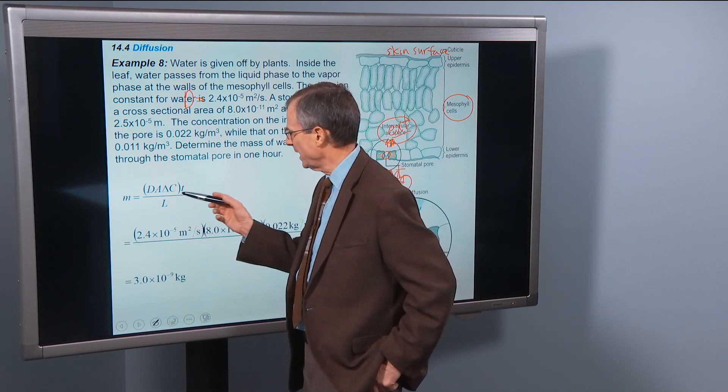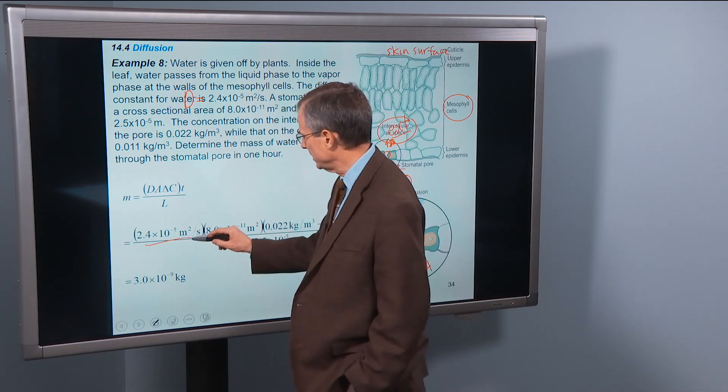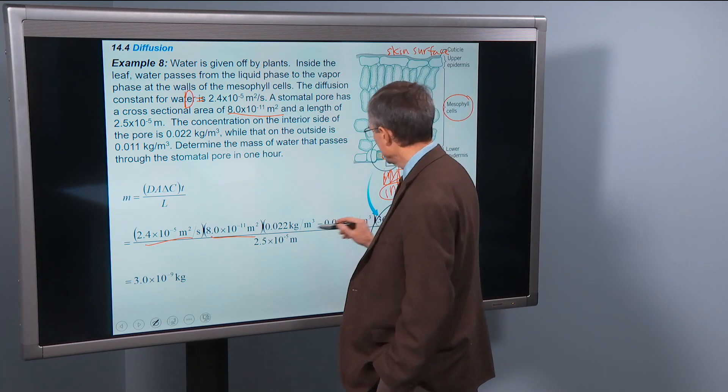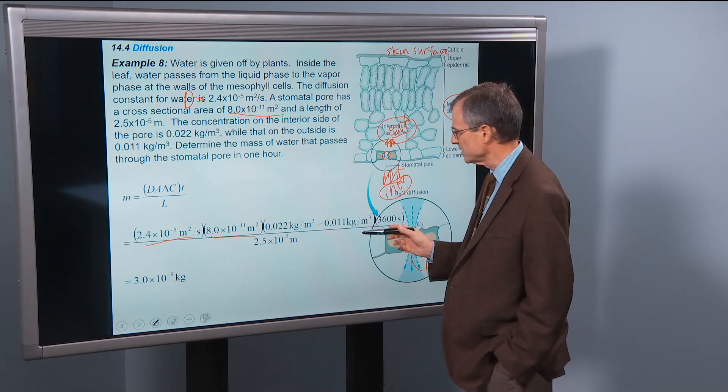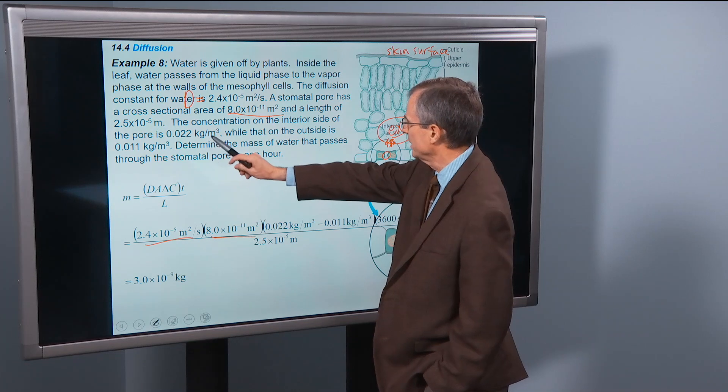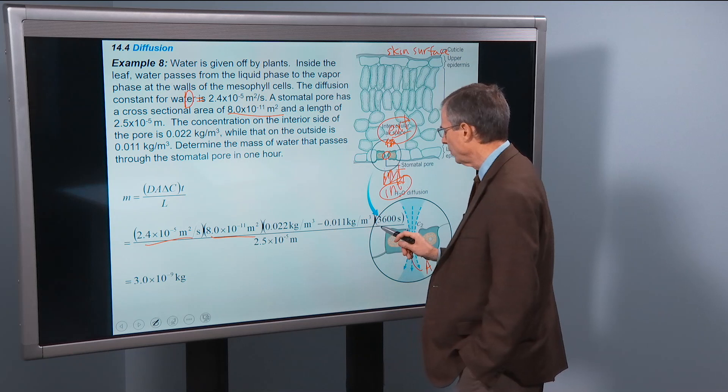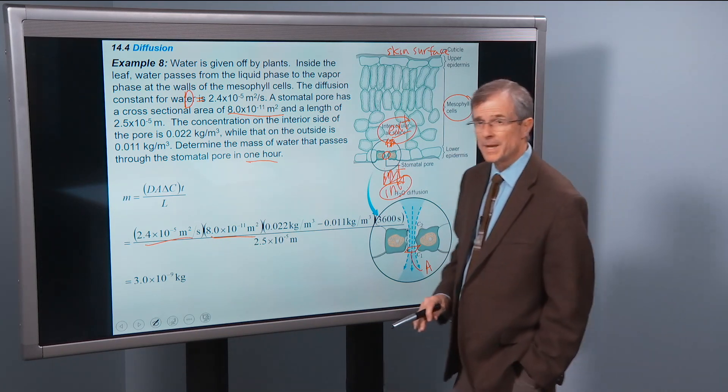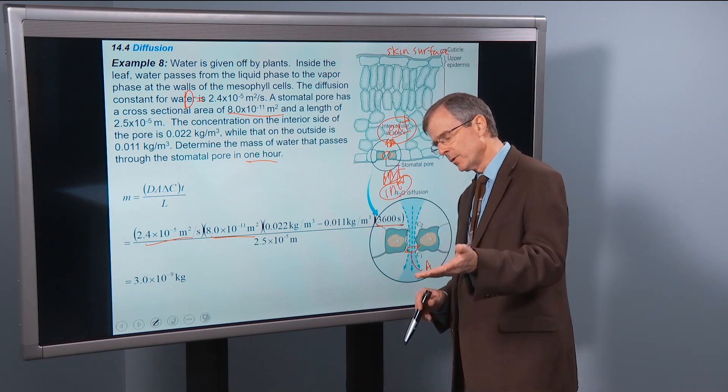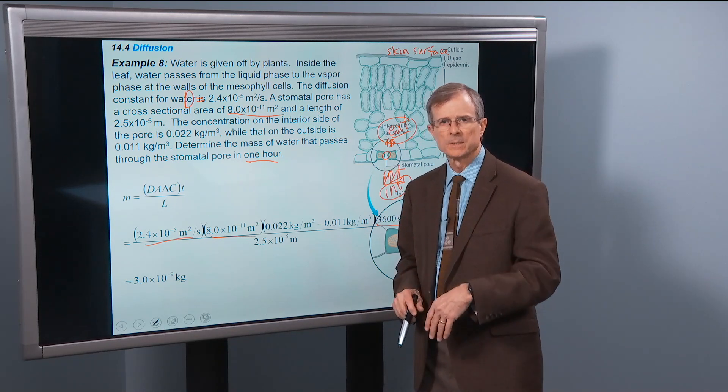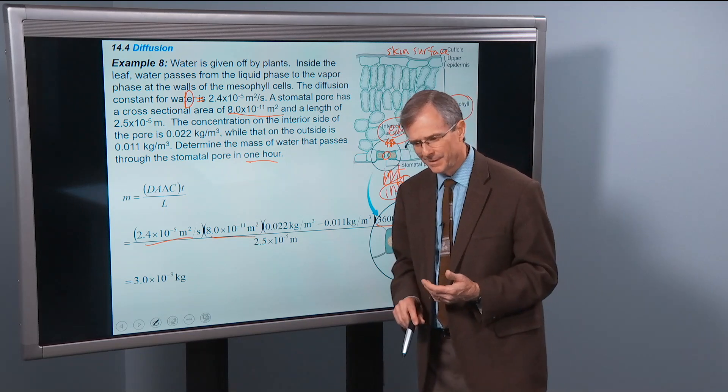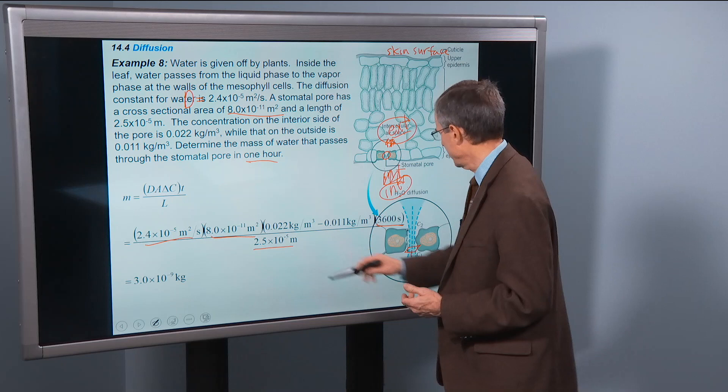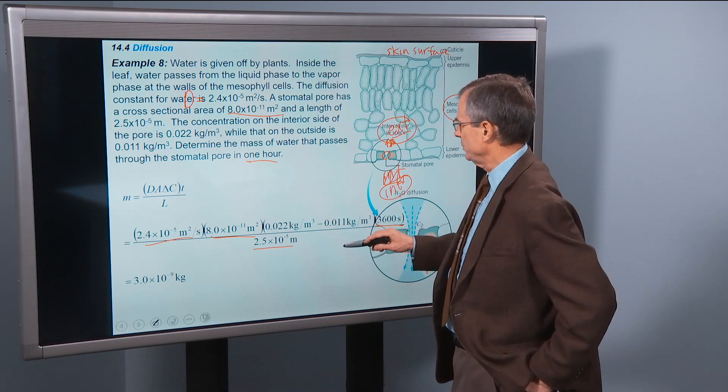So we just use Fick's law, DA for delta C times T divided by L. The diffusivity is given here. The cross-sectional area was given 8.0 times 10 to the minus 11. And that's this, times the difference, C2 minus C1. The higher concentration minus the lower concentration. 0.012 kg per cubic meter minus 0.011 kg per cubic meter. Then we're asked about how much water passes through that pore in one hour. An hour is 3,600 seconds. 60 minutes per hour times 60 seconds per minute. 60 times 60 is 3,600. That's the number of seconds in an hour. And then we're dividing by length. That length of the pore, 2.5 times 10 to the minus 5.